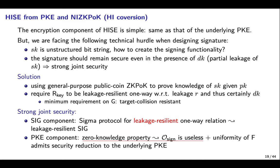The encryption component of HISE is the same as that of the underlying public key encryption. The technical hurdles when designing a signature are: first, the secret key is an unstructured bitstream — how to create signing functionality? Second, to attain strong joint security, the signature should remain secure even in the presence of the decryption key. Our solution is using general-purpose public coin ZK-POK to prove knowledge of the secret key with respect to the public key. We require relation R_key to be leakage-resilient one-way, given leakage R and thus certainly the decryption key. The minimum requirement on the PRG of PKE's key generation algorithm is target-collision-resistance. This allows us to attain strong joint security.